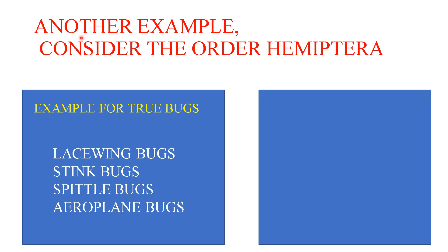Here is another example. Consider the order Hemiptera. The insects belonging to Hemiptera are called true bugs. Examples of true bugs are: lace wing bugs, stink bugs, spittle bugs, and aeroplane bugs. While writing these names, you must provide a gap between the two words.